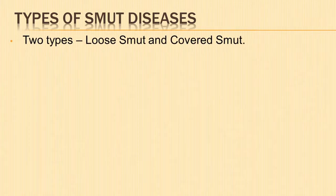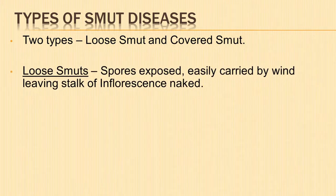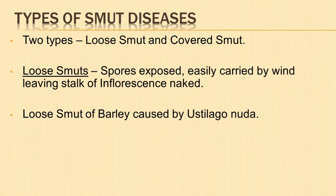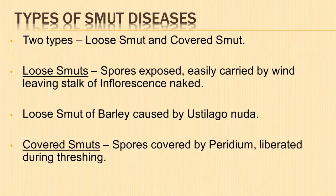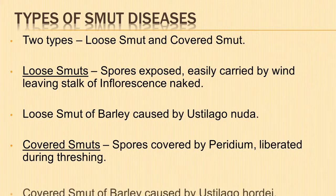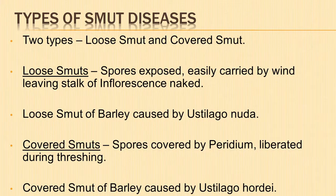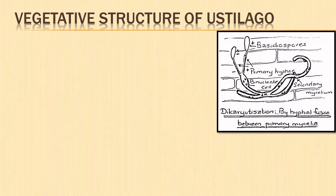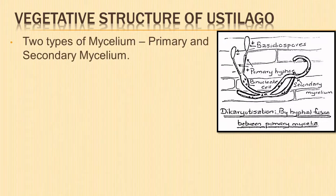In loose smuts, at the flowering time, the black sooty mass of spores is exposed and is easily blown away by wind, leaving the stock of inflorescence bare or naked. For example, loose smut of barley is caused by Eustilago nuda. In covered smuts, the black powder of spores remains covered by the wall of the grain, and the spores are liberated only by breaking the wall during threshing. For example, covered smut of barley is caused by Eustilago hordei.